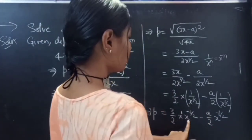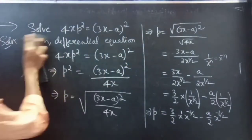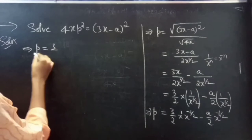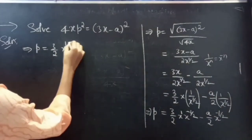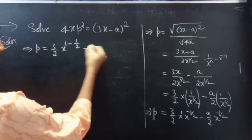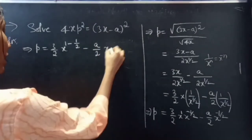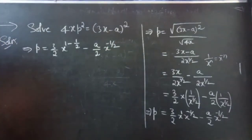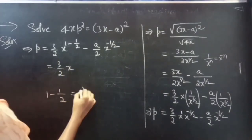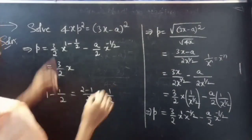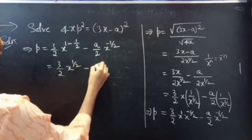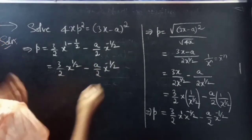Here we have x^1 · x^(−1/2), so we add the powers. p equals 3/2 · x^(1 − 1/2) minus a/2 · x^(−1/2). Since 1 minus 1/2 equals 1/2, this becomes p equals 3/2 · x^(1/2) minus a/2 · x^(−1/2).